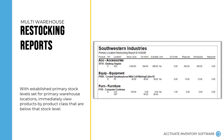Restocking reports show those products that need their primary location restocked for picking. This allows you to pull product from backstock locations periodically and keep up with your inventory to make sure picking remains efficient.